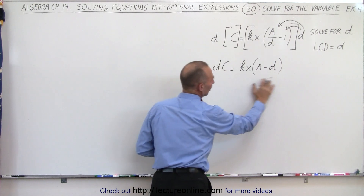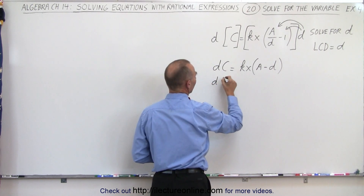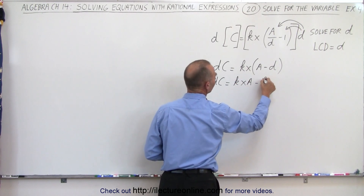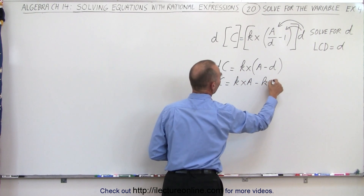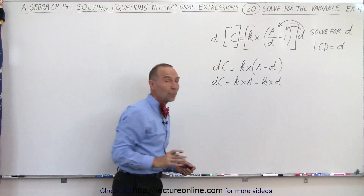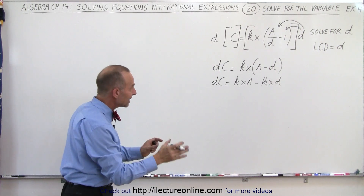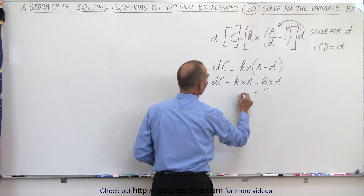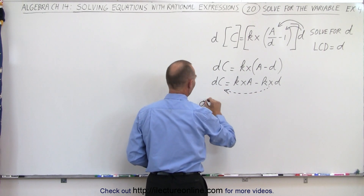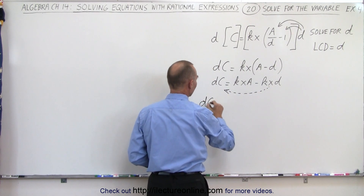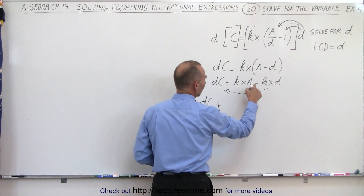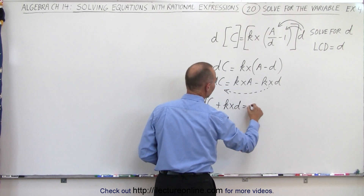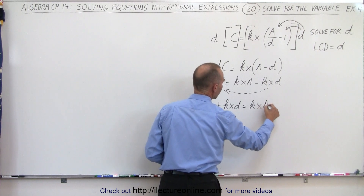Now we have to get rid of the parentheses. So we have D times C is equal to KXA minus KXD, and now we have to move all the terms that contain a D to one side, and everything else on the other side. So this will go to the left side. So we have D times C plus — because the negative becomes a plus — KXD is equal to KXA.